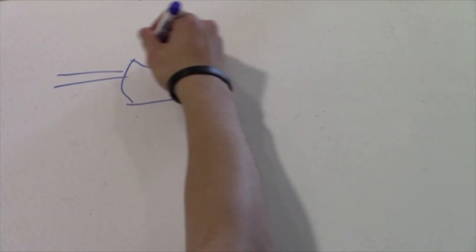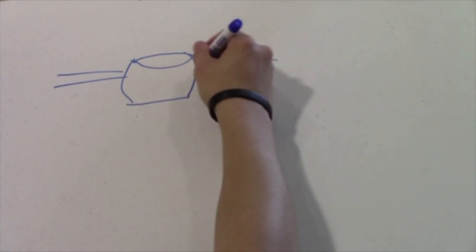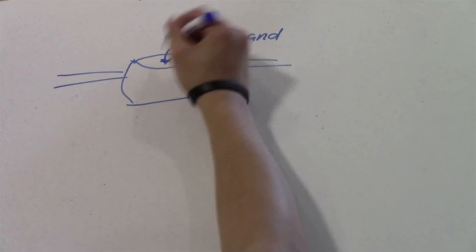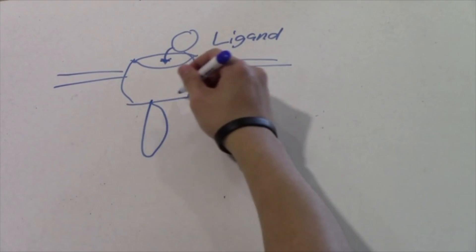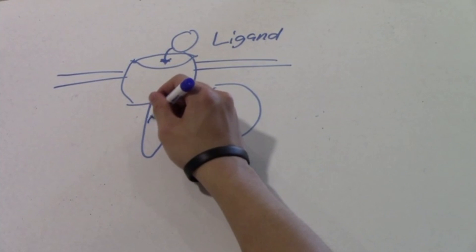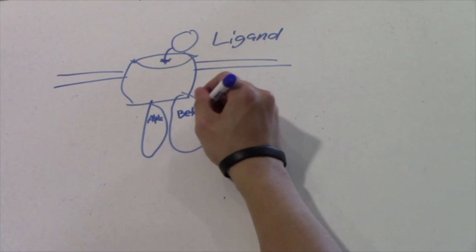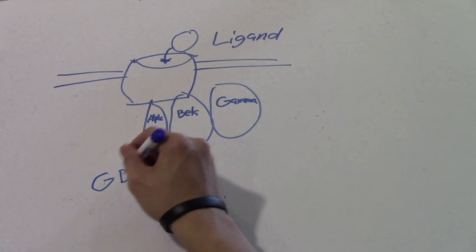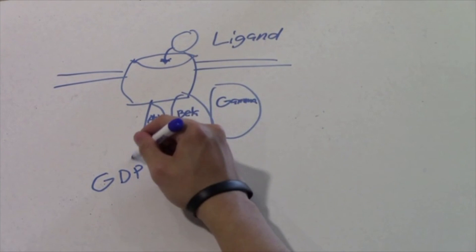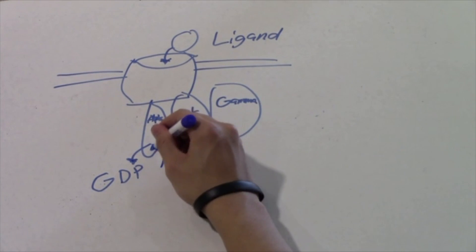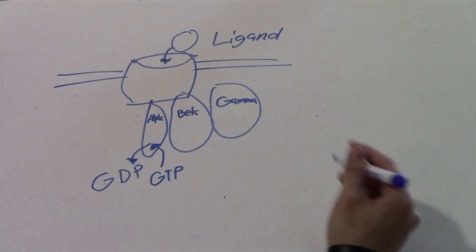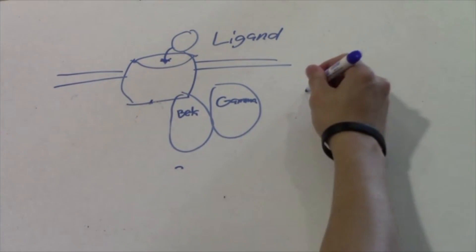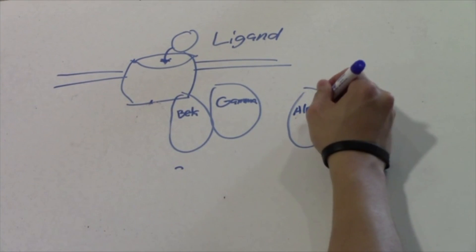The process starts off when the ligand binds to the G-protein coupled receptors. A ligand is a complex that contains a substance that has a biological purpose. The G-protein is composed of three components: the alpha-G, the beta-G, and the gamma-G. The GDP is part of the alpha-G, but when the G-protein gets activated, the GTP is going to replace it — a guanosine triphosphate.